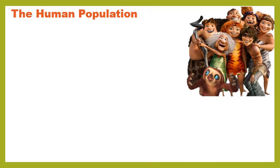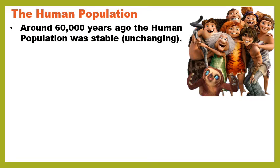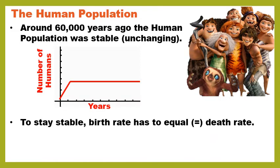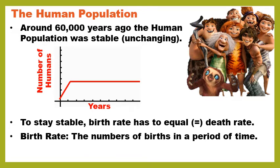This is going to be a part-history, part-science lesson. Let's travel back in time: 60,000 years ago the human population was stable — unchanging. I'll represent this with a graph where the x-axis shows years and the y-axis shows number of humans. The population number stays the same even as the years change — that's what we call stable. To stay stable, birth rate has to equal death rate. Birth rate is the number of births in a period of time.